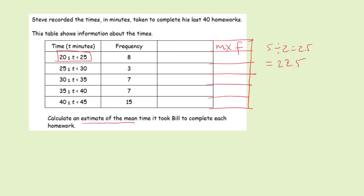I will show you a really easy way to work out the midpoints. All you have to do is add the 20 and the 25 together which is 45, and then divide 45 by 2 which is 22.5. It doesn't matter what the class width is or how big the difference is between the numbers, this will always give you the correct midpoint.